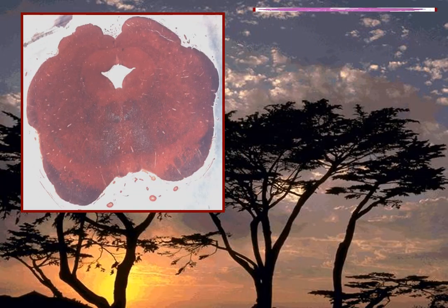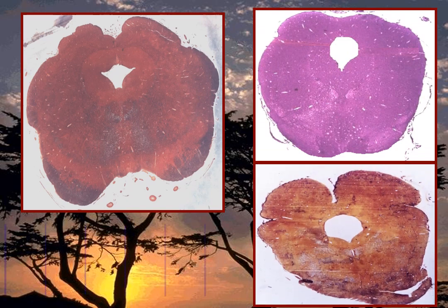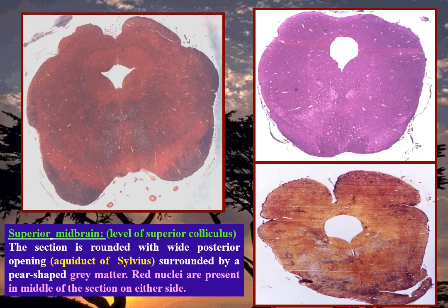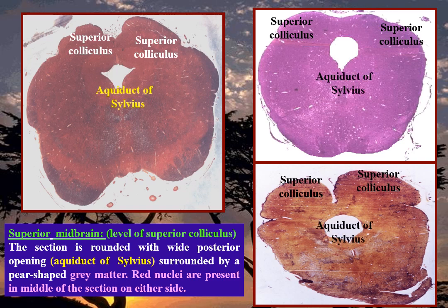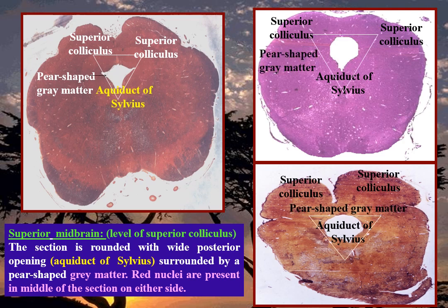Midbrain superior level — the level of the superior colliculus. The section is also rounded with a wide posterior opening for the aqueduct of Sylvius, surrounded by a pear-shaped gray matter. Red nuclei are present in the middle of the section on either side.